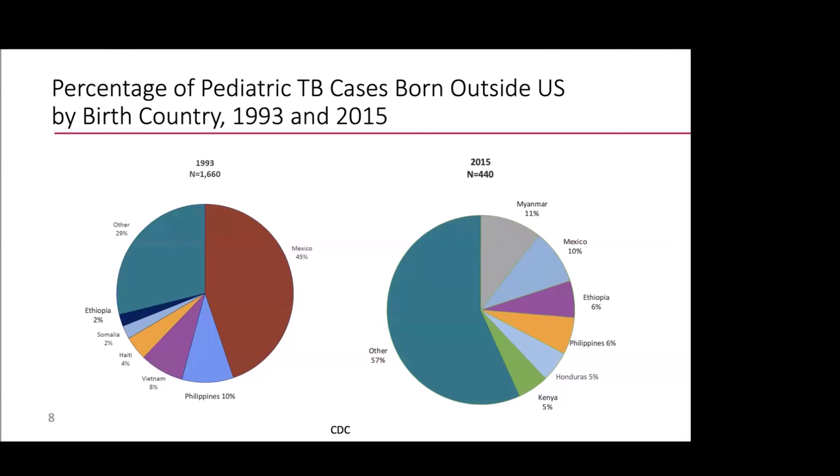The percentage of kids who are born outside the United States who develop TB is quite high. In Baltimore City, what I notice the most is that whatever the newest immigrant group to the city is, is often who we're seeing. So it often follows your local epidemiology, but this is what CDC reports overall.